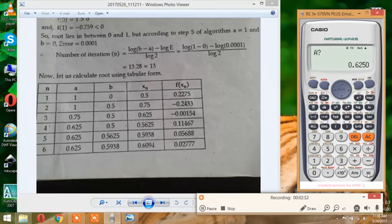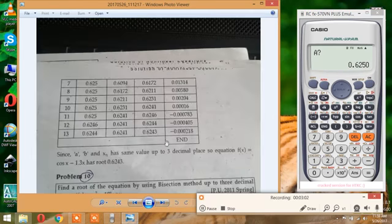So we continue to do this, and we will get the value of X. We get the value of X, 0.6243, as the answer to the problem.